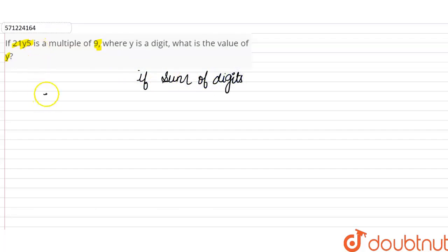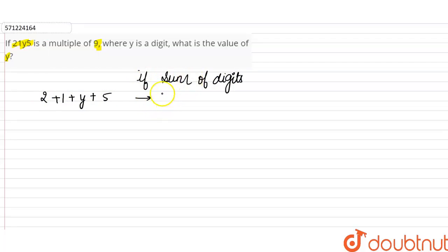So in this question, 2 plus 1 plus y plus 5 should be a multiple of 9 — that is, the sum of digits should equal 9 or be divisible by 9.